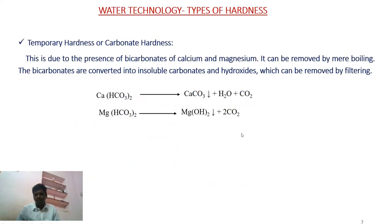Types of hardness: hardness can be expressed into two types. One is temporary hardness, due to the bicarbonates of calcium and magnesium present in that water. This hardness can be removed by simple boiling. If you heat calcium bicarbonate, it is converted into calcium carbonate. Similarly, magnesium bicarbonates are converted into magnesium hydroxides. Both calcium carbonate and magnesium hydroxides are water-insoluble and can be removed by simple filtration.